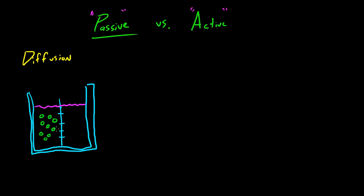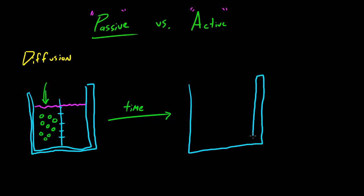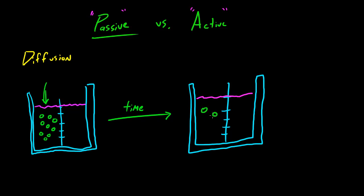Now sugar is going to dissolve in the water, and on the left side — say we dumped a green pixie stick in there — all that sugar is going to be concentrated on the left-hand side of the bucket. However, over time what the sugar is going to do is move from the area of higher concentration on the left-hand side to lower concentration on the right-hand side. So it's still going to be filled with water, but the sugar molecules are going to spread out. That's basically what diffusion is.